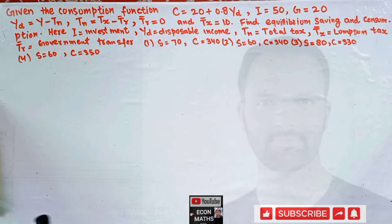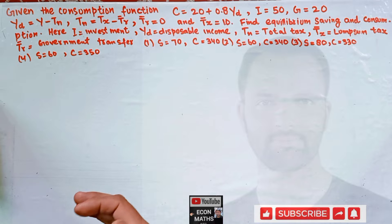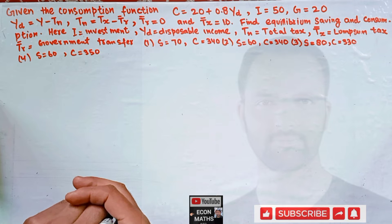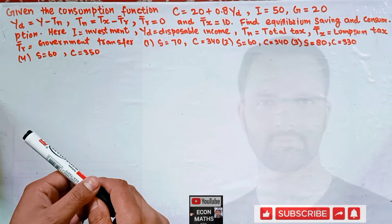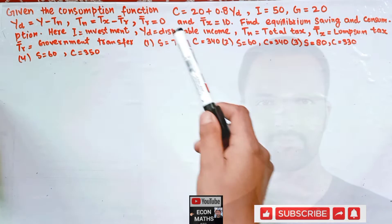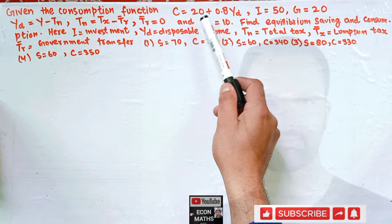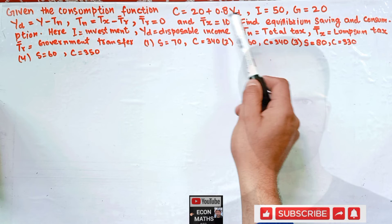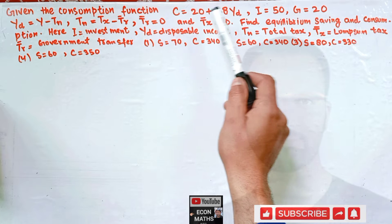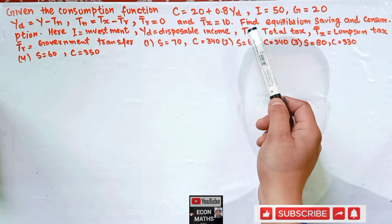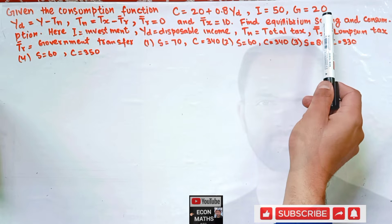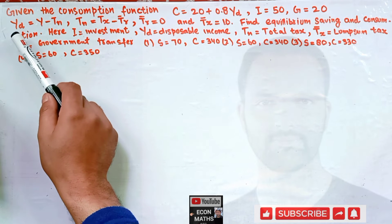In this video on the mathematical economics series, we will try to solve a problem asked on the Telegram channel regarding finding the equilibrium saving and consumption function. The question is: given the consumption function C = 20 + 0.8·Yd, where C is consumption and Yd is disposable income, investment is given as 50, and government expenditure is given as 20.